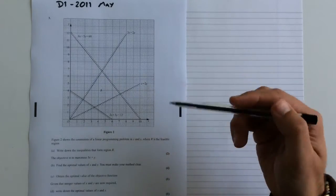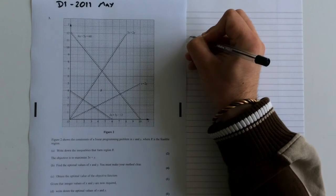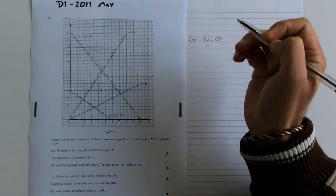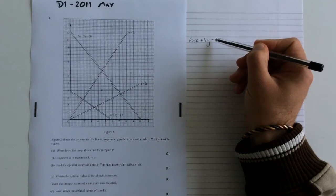Now we do have to be a little bit careful with this. What we're going to do is we're going to take this first one here, which is 6x plus 5y equals 60. And of course we've got to put the inequality sign in there. We've got to know which way round to do it.